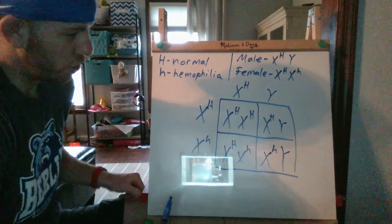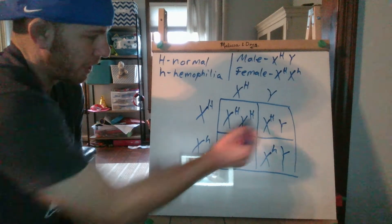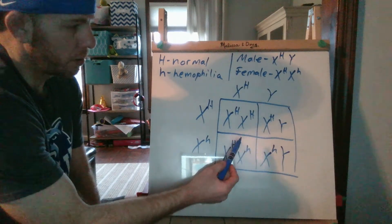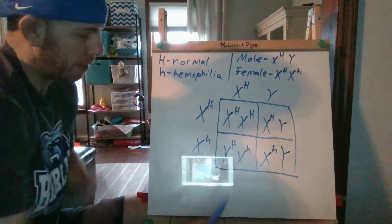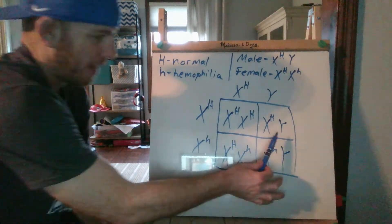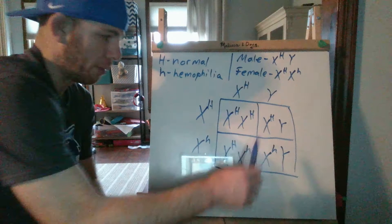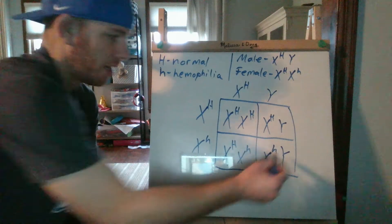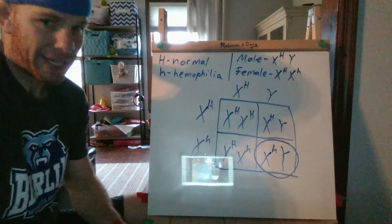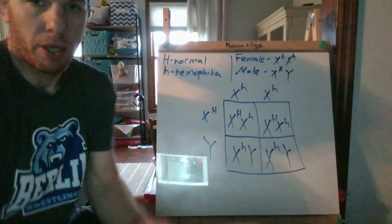We have a genotype ratio of one to two to one. One is homozygous dominant. Then we have a heterozygous female. But over here with the males, there's a 25% chance of a normal male and a 25% chance of a hemophiliac male, X lowercase h Y.